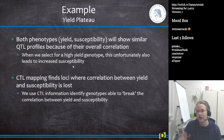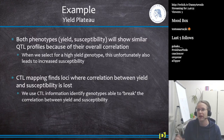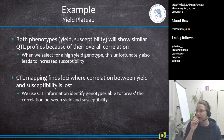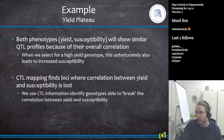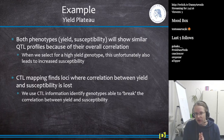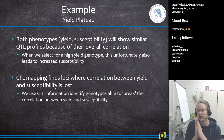The yield plateau tells us that both yield and susceptibility — because they are highly correlated — give you the exact same QTL profile. So when you select for high yield you will also select for increasing susceptibility, which you don't want because that means you have to use more and more chemicals. The idea is that CTL mapping finds loci where the correlation between yield and susceptibility is lost, and we can then use that CTL information to break the correlation between yield and susceptibility.